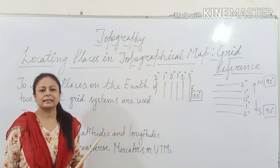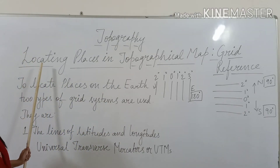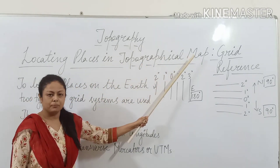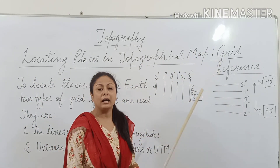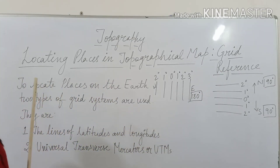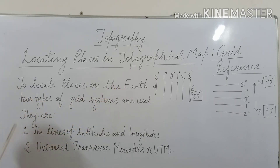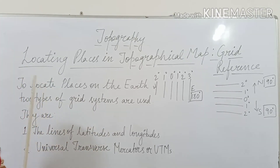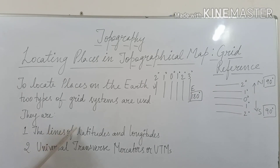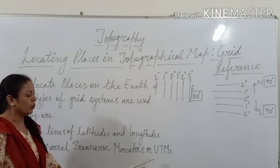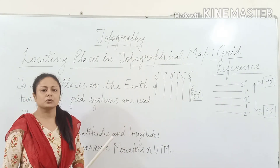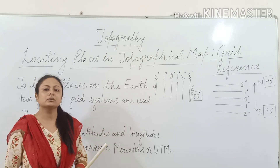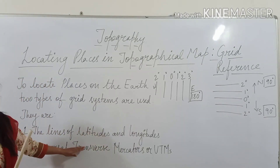Welcome students. Today in topography we will learn about how we can locate places in a topographical map, and we call it grid reference. To locate a place on the earth, two types of grid systems are used: the lines of latitudes and longitudes, and the Universal Transverse Mercators, which we call UTMs. We will learn about them and how they help us to locate any place on the earth.